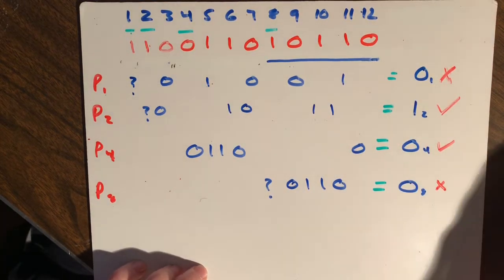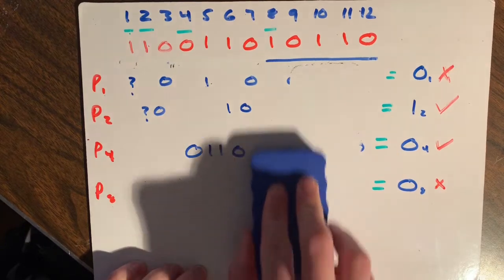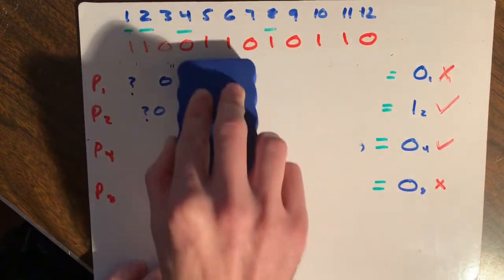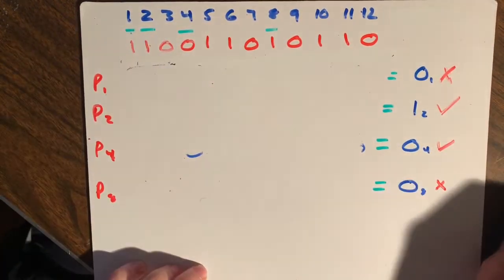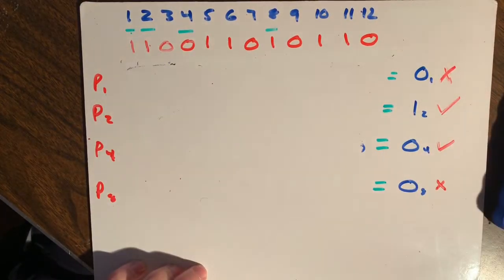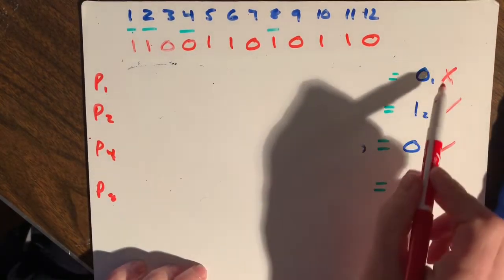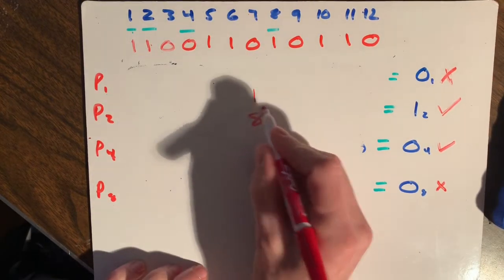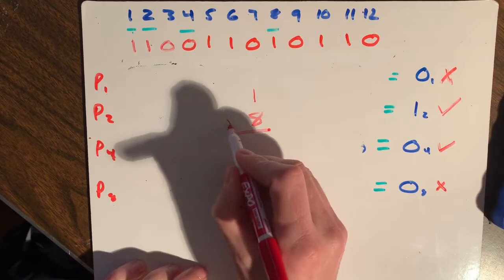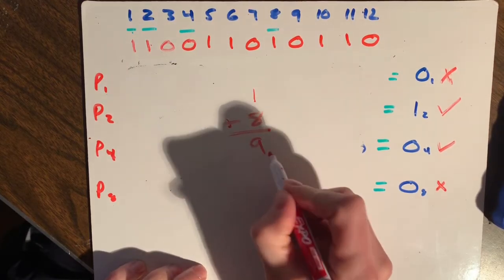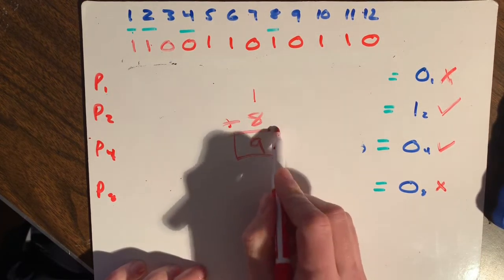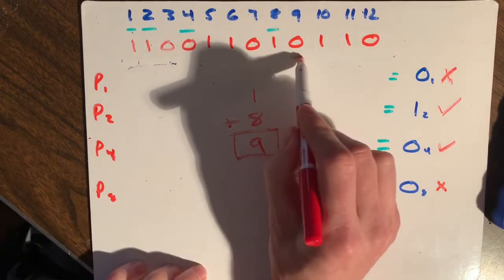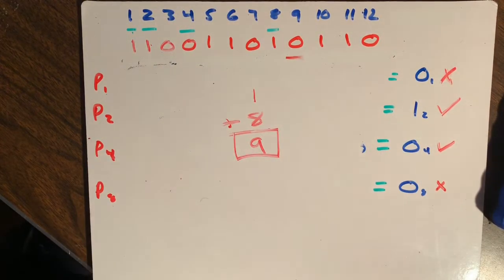Once you have identified which of these don't match up, then what you want to do is add them together. So our X's are on P1, and we have an X on P8. So then we add those together, and we know that bit nine is our corrupted bit, which is this one right here. So that's telling us that nine is supposed to be, where they have a zero...